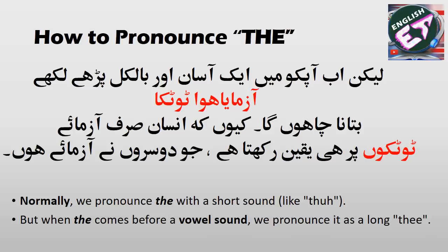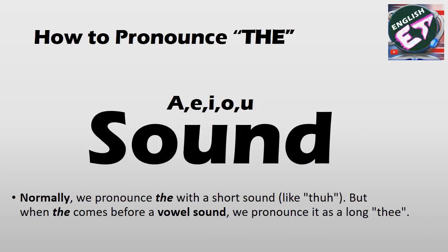Ab isi dono chizo ko le kar aage chalte hain. Yaad rakhiyega: English mein do kisam ke sounds hote hain. Aisa lafz jo vowel se shuru hota ho — jaise A, E, I, O, U — us sound ko 'sound' kehna zaroori hai, lafz na kehna. Kyunki kai lafz 'A' se shuru hon ya phir 'U' se — agar ek lafz 'U' se shuru ho raha hai, uska matlab yeh nahi ki woh vowel wala sound dega. Sometimes vowel ka sound nahi deta, jaise 'university', 'uniform'.